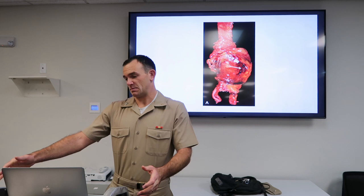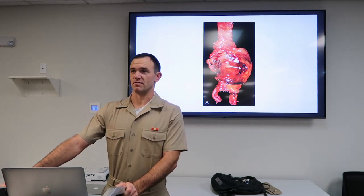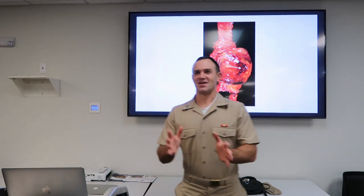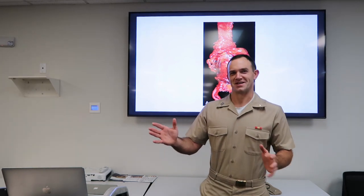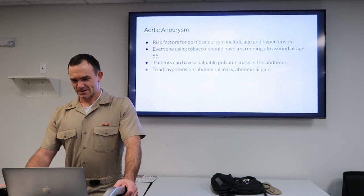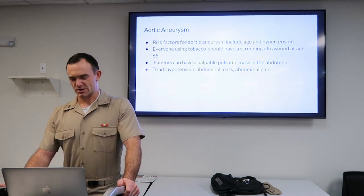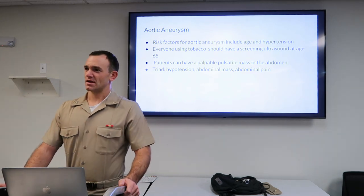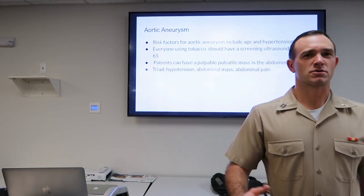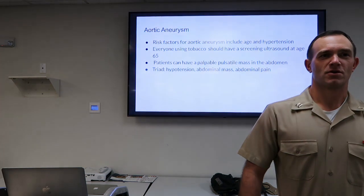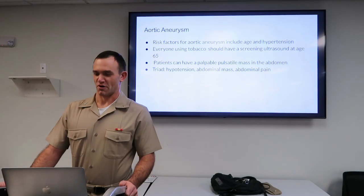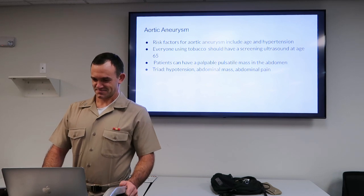I have seen people with very large aneurysms. Obviously this is a pathology image — you just have the aorta; this person obviously did not make it. So: abdominal pain, abdominal mass, syncope, hypotension. Everybody who has ever smoked should have a screening abdominal ultrasound starting after age 65. If you have family members who have smoked in the past, it would be worthwhile to do this.